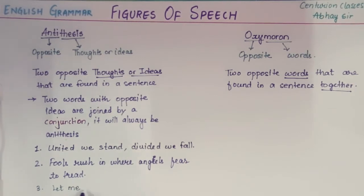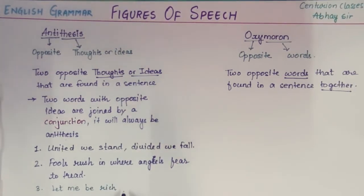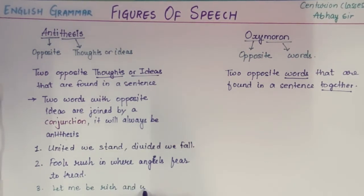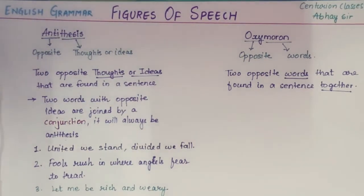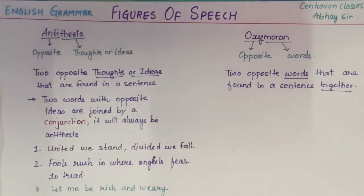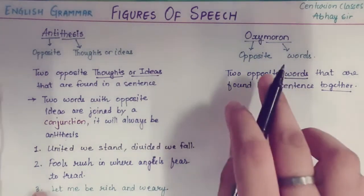The next antithesis example is: 'Let me be rich and weary.' These are two complete thoughts joined with the help of a coordinating conjunction 'and.' Rich and weary are two opposite ideas — if you are rich, you cannot be weary. So this is your antithesis.